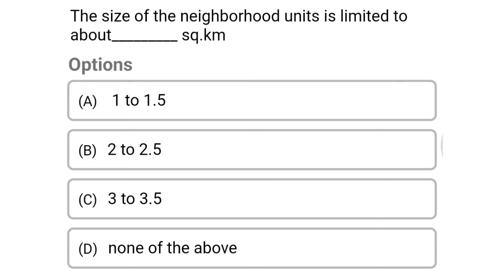Next question: the size of neighborhood units is limited to about how many square kilometers — option A, 1 to 1.5; option B, 2 to 2.5; option C, 3 to 3.5; option D, none of the above. The correct answer is option A, 1 to 1.5.